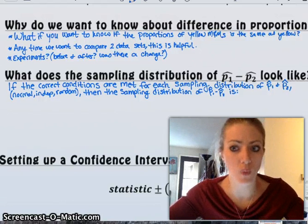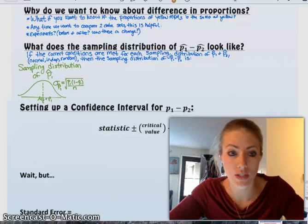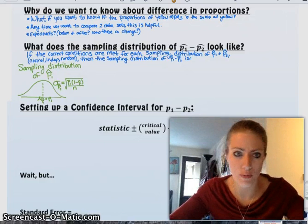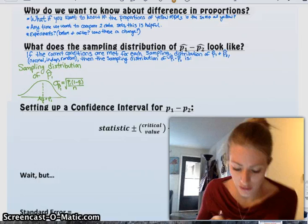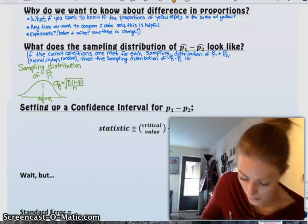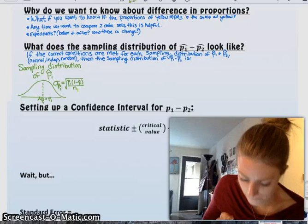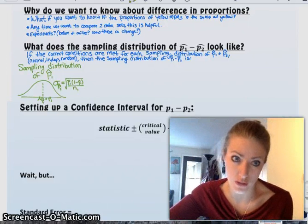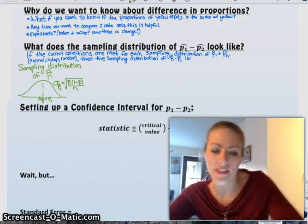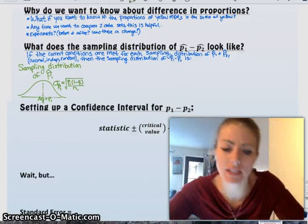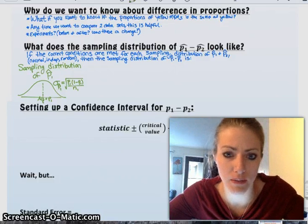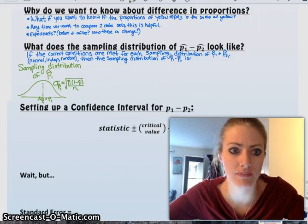then the distribution of p1 hat is going to look like the following. So the sampling distribution of p hat 1 has a mean of the true proportion, so p1, and then the standard deviation is the square root of p1 times 1 minus p1 all over n, n1. We'll say n1 is the sample size of the first sample. So that's the sampling distribution of p hat 1. And then we could do the exact same thing for p hat 2 as long as the conditions are met. So it'll look exactly the same except with p2s and n2s instead of p1s, because it's for the second sample and the second population.